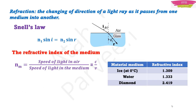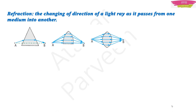In our previous class we talked about reflection. In this class we will talk about refraction — the changing of direction of a light ray as it passes from one medium to another. We learned how to calculate the refractive index using Snell's law, and how the change of direction can be explained using a prism, which led to the formation of images in lenses.